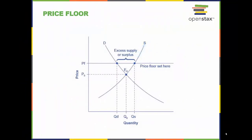This model shows the impact of a price floor on a market. The intersection of demand D and supply S would be at the equilibrium point E0. However, a price floor set at PF holds the price above E0 and prevents it from falling. The result of the price floor is that the quantity supplied QS exceeds the quantity demanded QD — there is excess supply, also called a surplus.